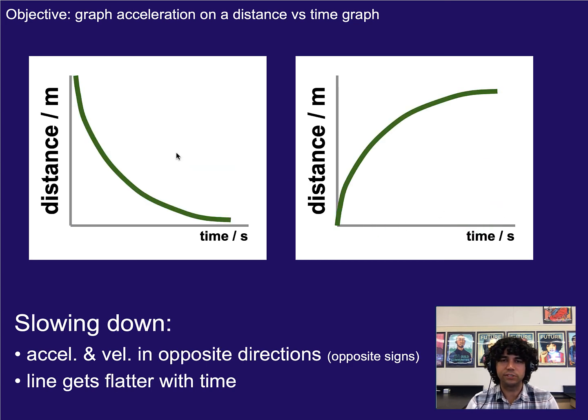Something that's slowing down is going to get flatter and flatter as time passes. So here we see it starts steep and gets flat. And here it starts steep and gets flat. So again we're looking at the steepness to tell how fast something is going, and then therefore also to tell whether it's speeding up or slowing down.